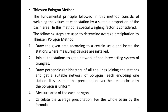The next method is the Thiessen Polygon Method. The fundamental principle of this method consists of weighing the values at each station by a suitable proportion of the basin area. A special weighting factor is considered. The following steps are used to determine average precipitation by the Thiessen Polygon Method.